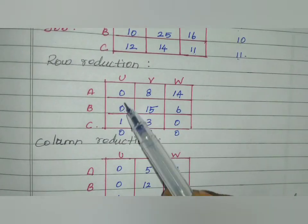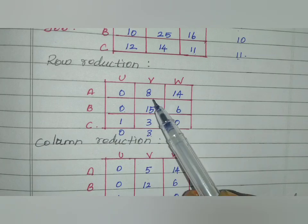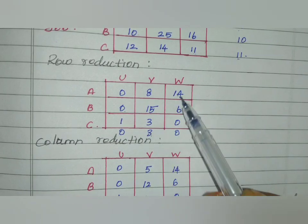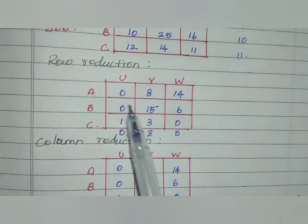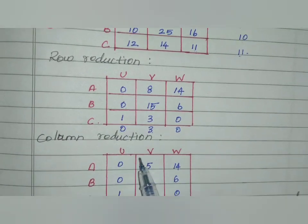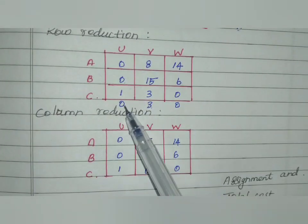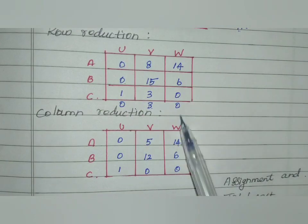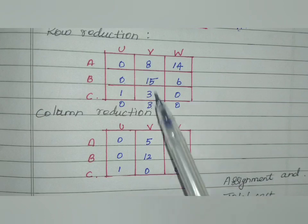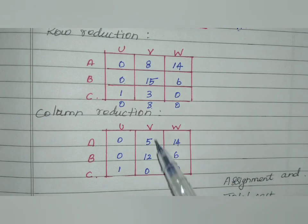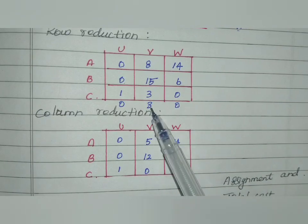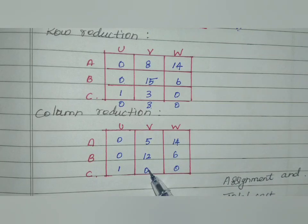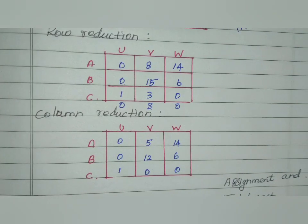Column reduction: the minimum value of column 1 is 0, column 2 minimum is 3, column 3 minimum is 0. So column 1: 0 minus 0, no change. Column 2: 8 minus 3 = 5, 15 minus 3 = 12, 3 minus 3 = 0. Column 3 has minimum 0, so no change. Column reduction completed.